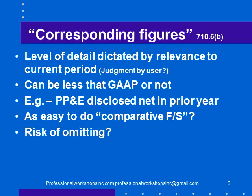You'd have to decide whether disclosing only net in the prior year meets the criteria of relevance to the current period. Someone could argue they really need to see cost and accumulated depreciation for both years. My other observation is that it's almost as easy to do comparative financial statements as it is to do corresponding figures once you get into the swing of it — so why not just do comparative financial statements all the time? The risk of omitting something is that you're open to criticism from a user later, so my view is you may as well just do comparative financial statements.